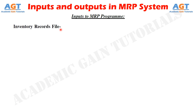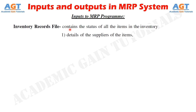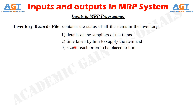The fourth input to the MRP program is the Inventory Records File. The inventory record file contains the status of all items in the inventory. It includes scheduled receipts of units of an item as a result of orders placed to suppliers, details of the suppliers, the time taken by them to supply the item, and the size of each order. Under a computerized system, each item in inventory is carried as a separate file, and the MRP program accesses the status segment of the file according to specific time periods as needed during the program run.